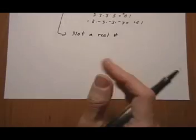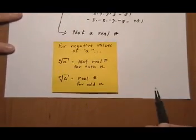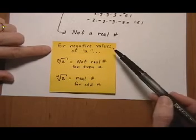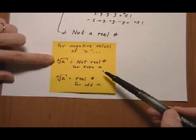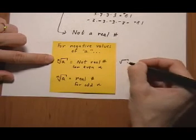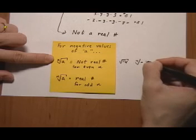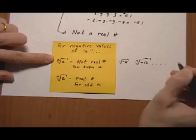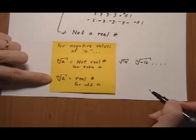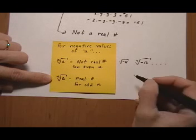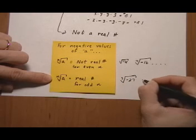The summary for what gives you a real or not real root, depending on whether you have a positive or negative inside the root, goes like this. For negative values of A, the nth root is not going to be a real number if n is even. So the square root of negative 4, or the fourth root of negative 16, or a 6th root, 8th root — they're all going to give you not real numbers. The nth root of a negative value does give you a real number if n is odd. For example, the cube root of negative 27 gives a real number.